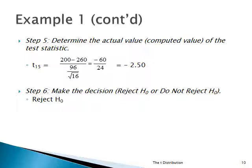Why do we reject? Because minus 2.50 is more to the left than the minus 2.1315 value. So we're in the rejection region. The probability of getting that value, going all the way to infinity, is less than 5%. This is not what you expect to see if H0 is true. H0 is 260 — we're pretty far away. 200 is relatively far away, and that's what this is telling you.